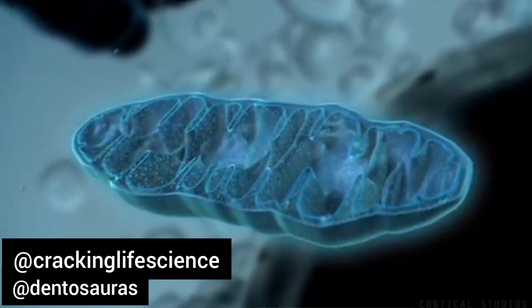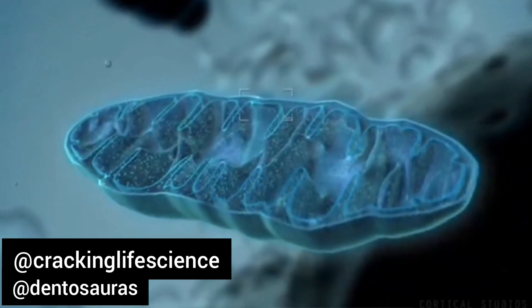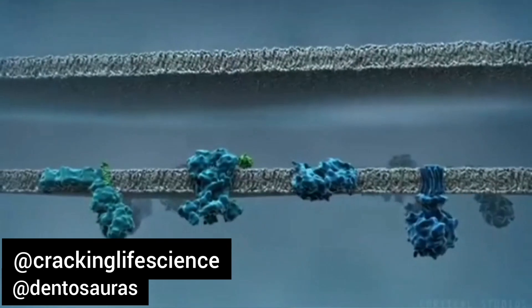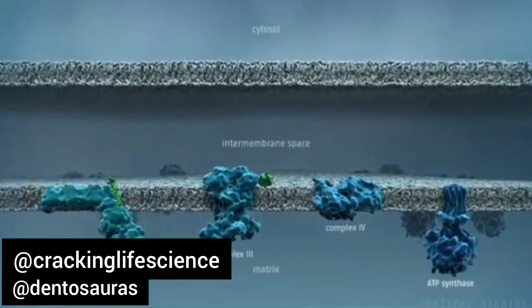ATP is generated at the inner membrane of mitochondria by an efficient mechanism called oxidative phosphorylation, involving several membrane protein complexes.